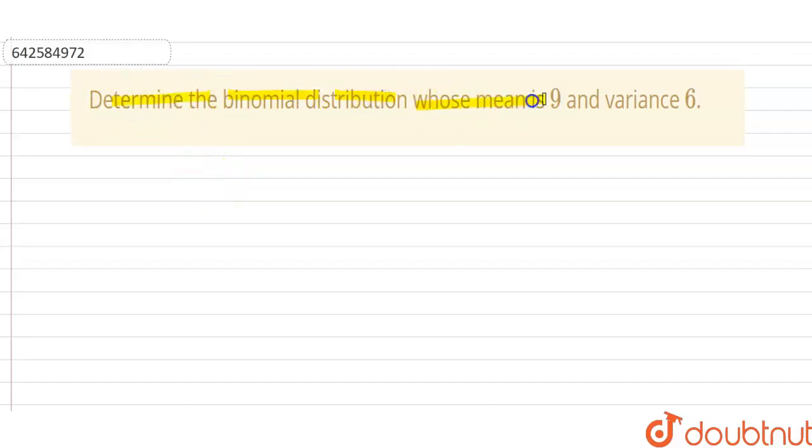determine the binomial distribution whose mean is 9 and variance is 6. So we have given that value of mean is equal to 9 and variance is